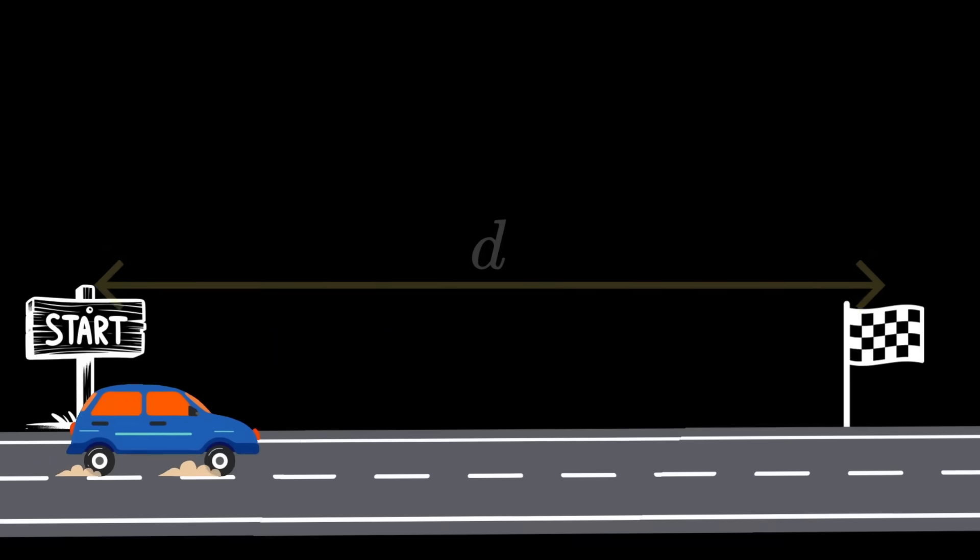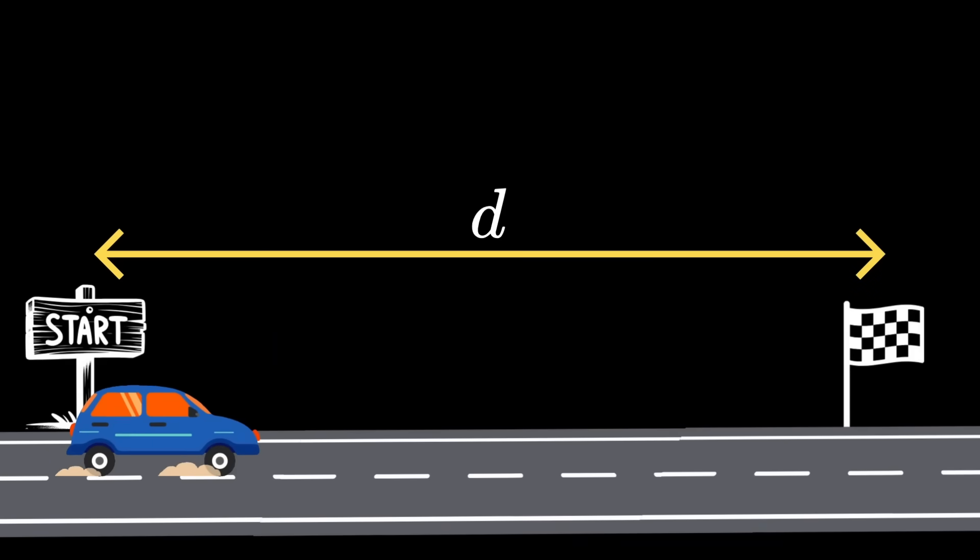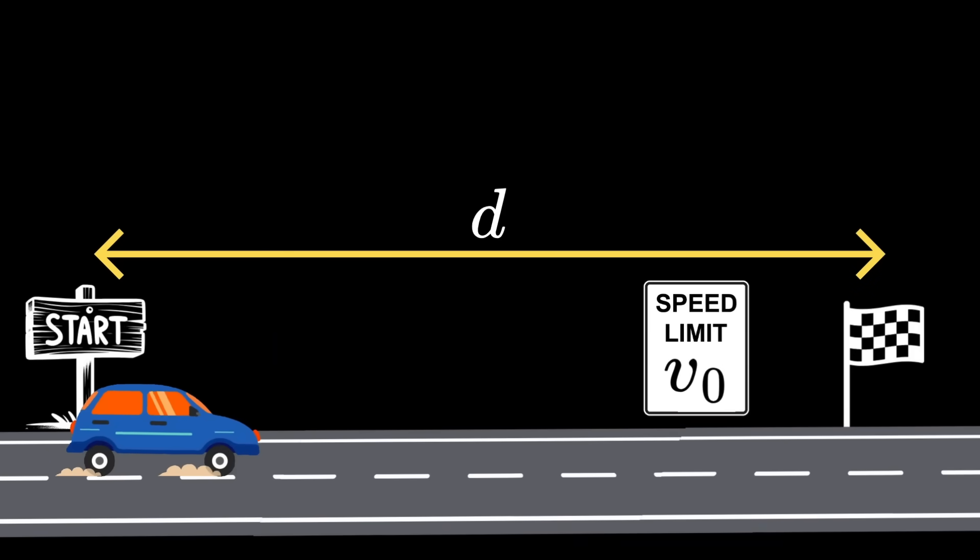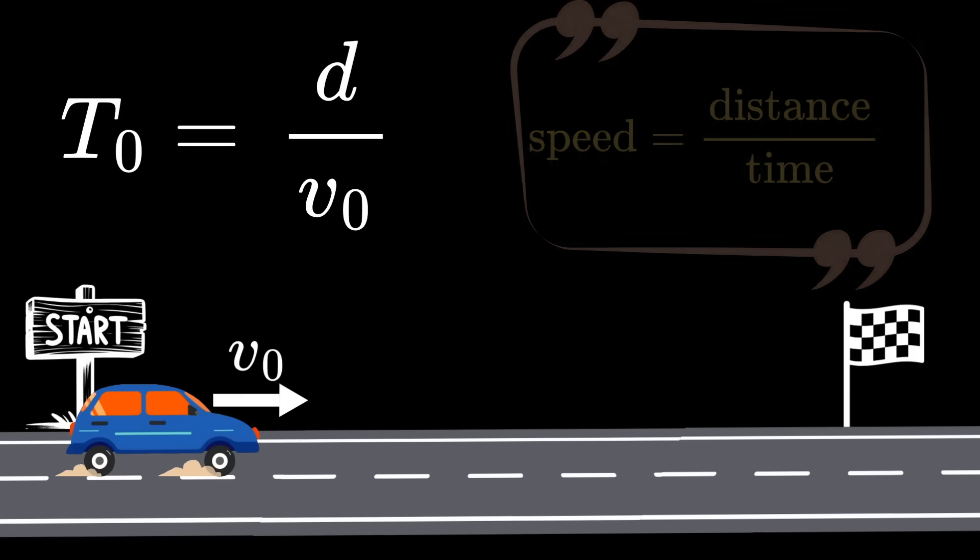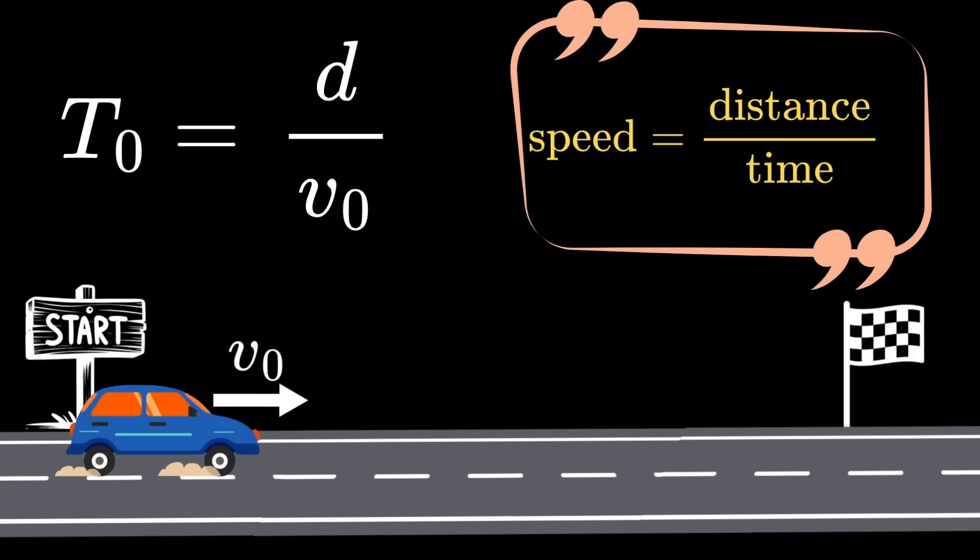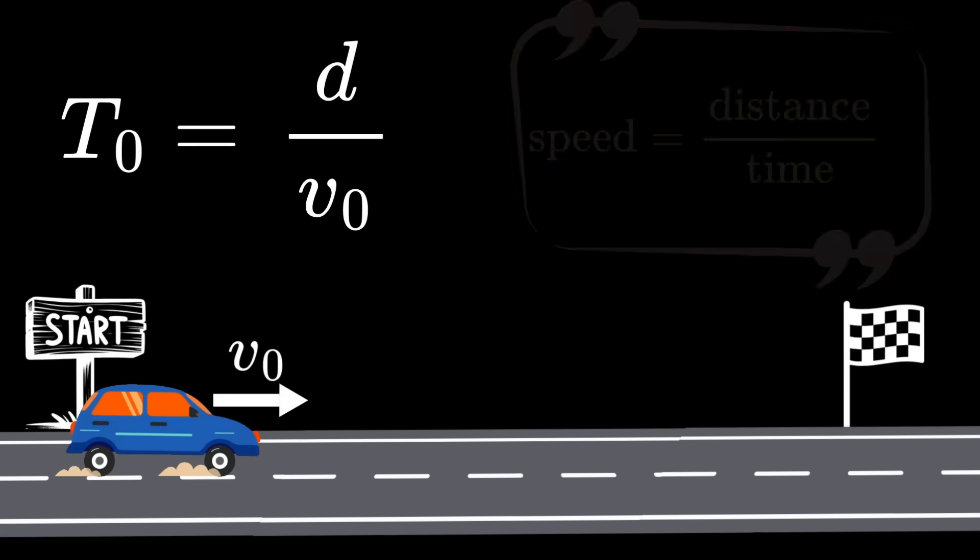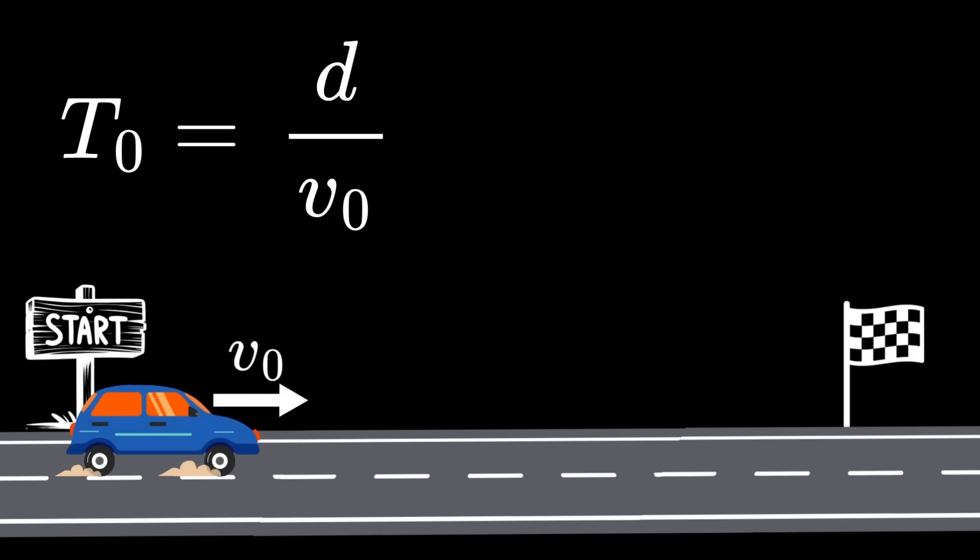Most people have a linear perception of the relationship between speed and time. But it's not really that simple. Let's break it down. Say we have to cover a distance d and the speed limit is v naught. So driving at the limit, it will take us a time of d over v naught. Let's call this time t naught. This is the basic relationship between distance, speed and time. Let's not worry about the time it takes for us to speed up or to break down or any of those real world non-idealities. We assume that we go at a constant speed throughout.